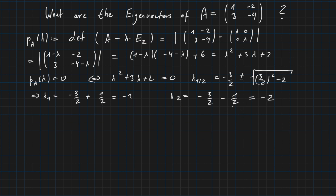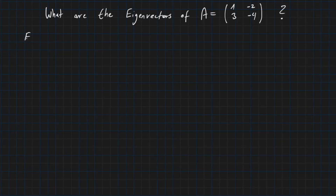So there we have it: our two eigenvalues, minus 1 and minus 2. Now the goal is to determine the eigenvectors, or even the eigenspace, related to each eigenvalue. In general, the eigenspace of a certain eigenvalue lambda_i of matrix A is exactly the kernel of A minus lambda_i times the identity matrix E2.